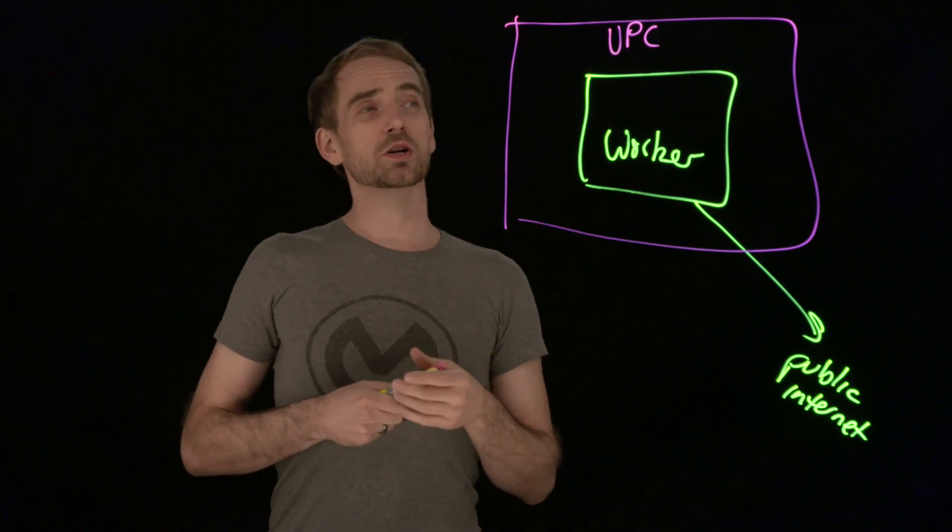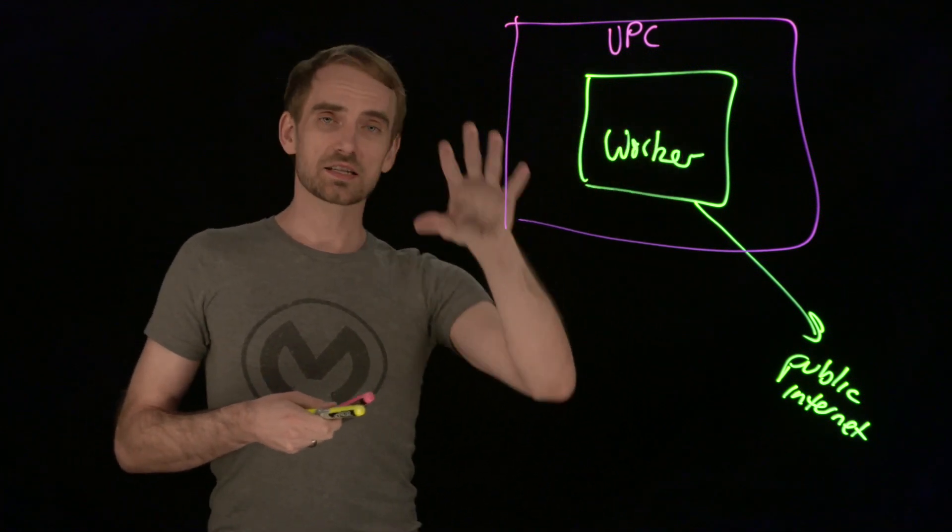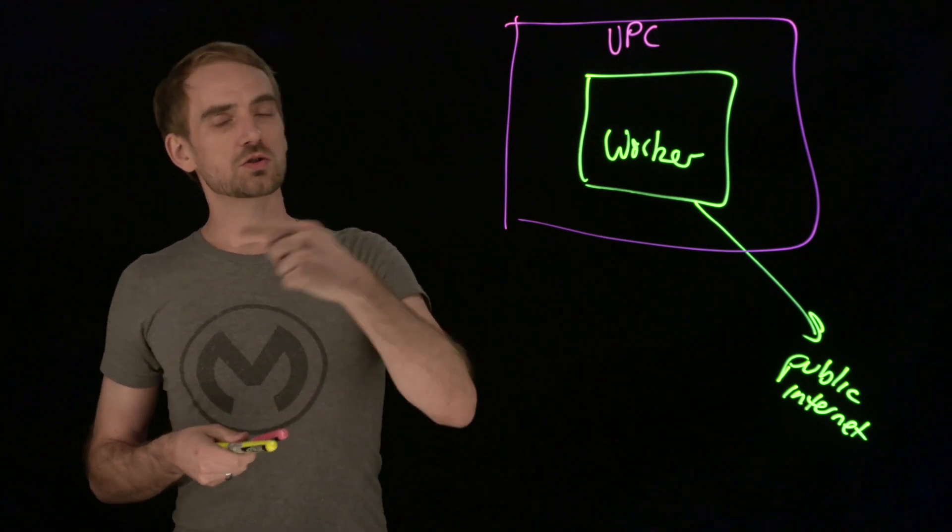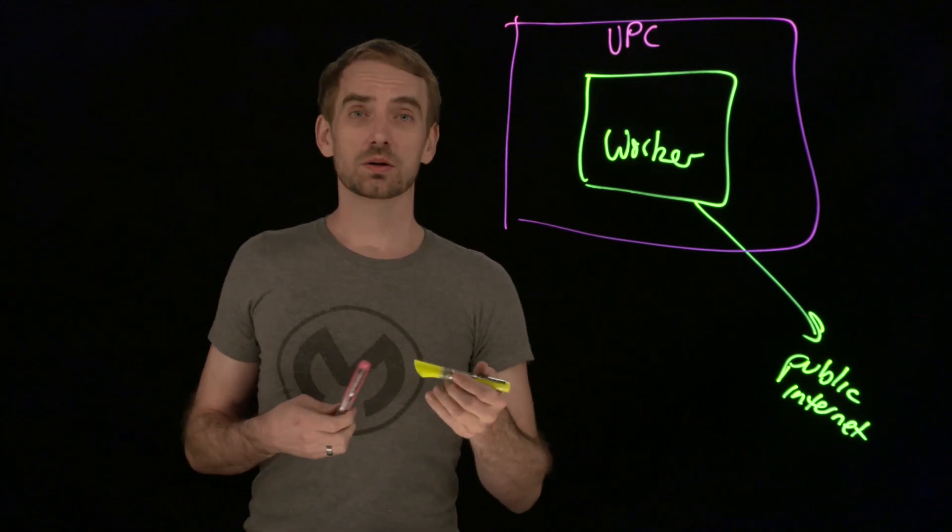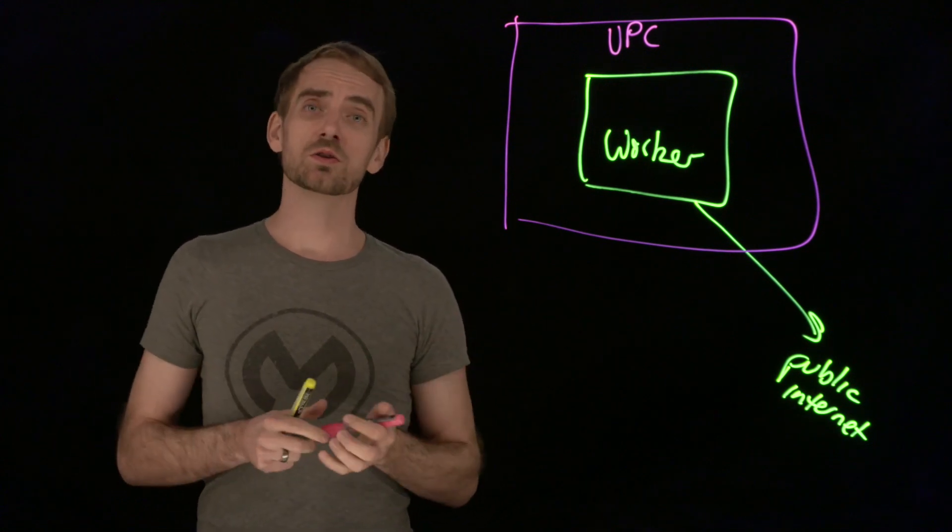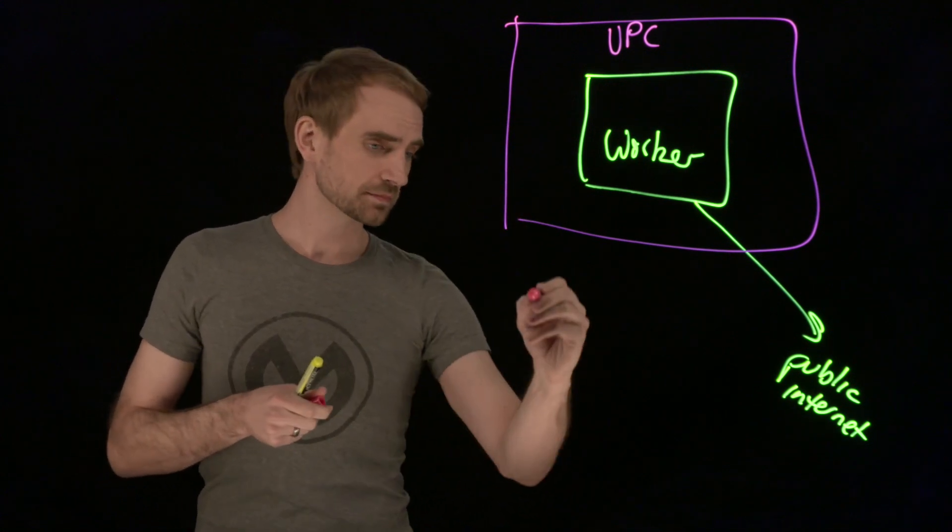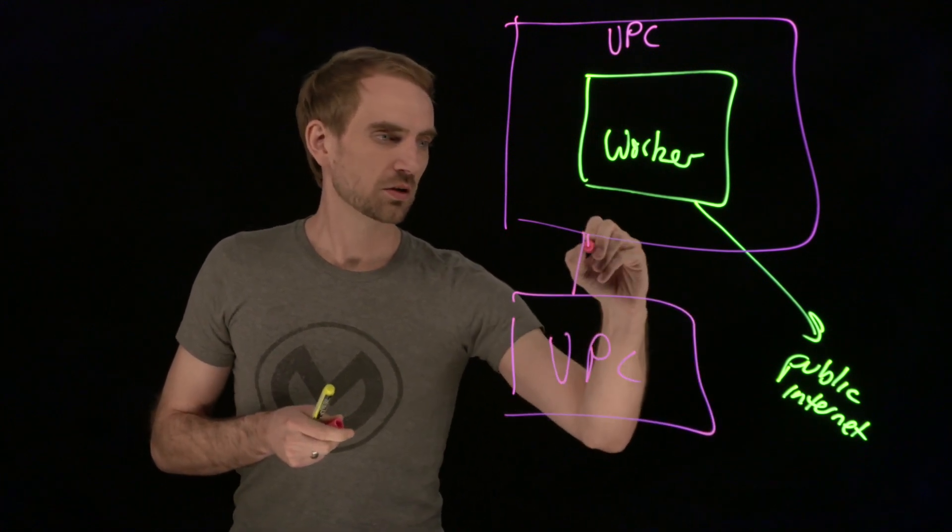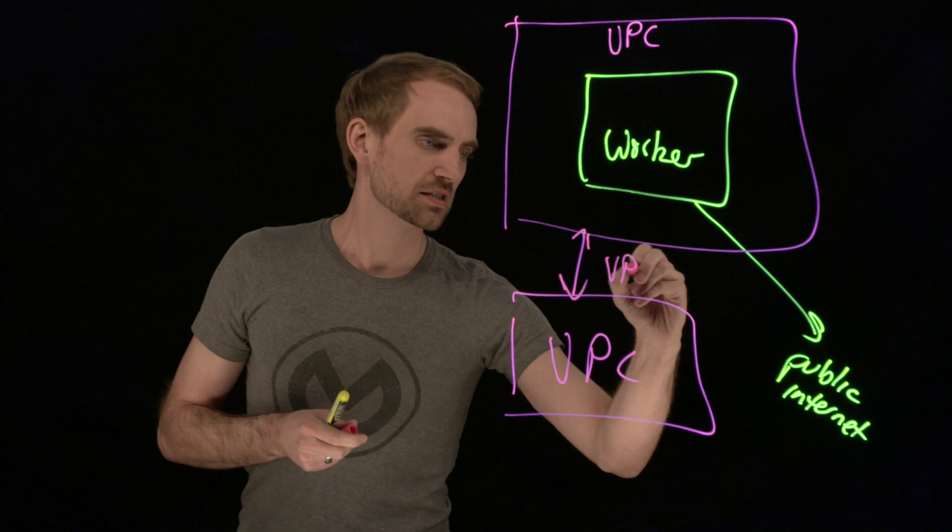Once you're in a VPC, you've got some options on linking your VPC, which is all of the workers that you have deployed in a VPC, to your data center or to other VPCs. If you're an Amazon shop and you use VPCs elsewhere, you can link those with a thing called VPC peering.